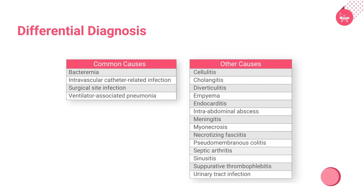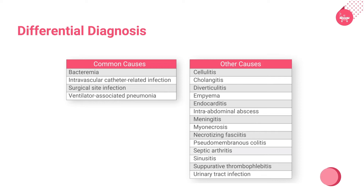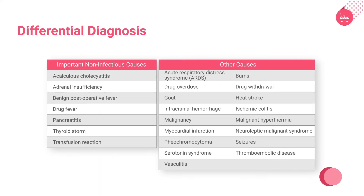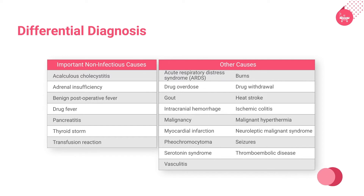The most common infectious etiologies of fever include ventilator-associated pneumonia, intravascular catheter-related infections, surgical site infections, catheter-related urinary tract infections, and bacteremia from these and other sources. The most common non-infectious causes include benign postoperative fever, drugs, transfusion reactions, and possibly venous thromboembolism.